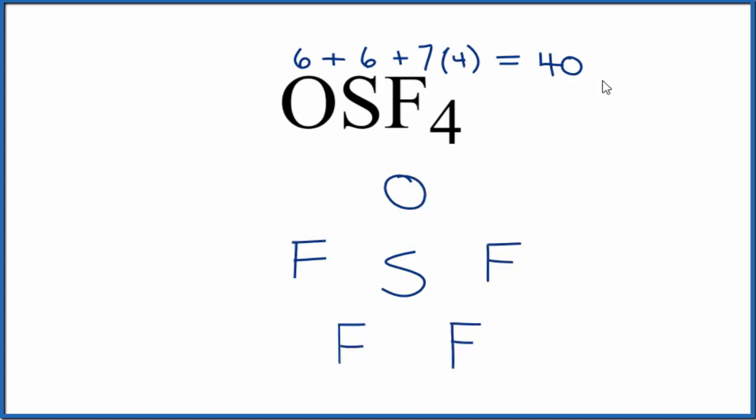So we have 40 total valence electrons for our Lewis structure. We'll put them between atoms to form the chemical bonds. So at this point we've used 10 valence electrons. Sulfur has 2, 4, 6, 8, 10, but that's okay because it can have an expanded octet.